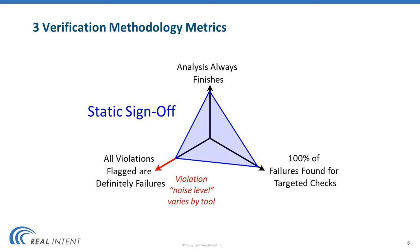If you look at static sign-off, it's a very different kind of methodology — it makes a trade-off in the third dimension. Static sign-off analysis finishes, and it also finds 100% of the failures targeted by the checks. But static sign-off does not find definite failures; it finds potential failures, the so-called noise. The noise level in static sign-off tools will vary from tool to tool, or the accuracy will vary from product to product. But the idea is that if you can iterate and clean out all the potential violations that are reported, then you have sign-off.